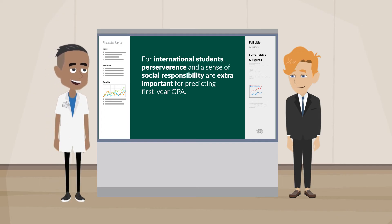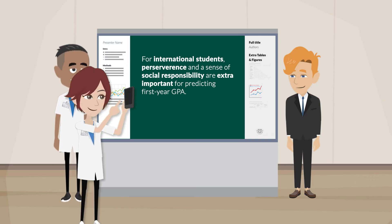But what if somebody is a super fan and they want a lot more detail than you can put on your poster? Or they just don't have time to stop right now and they just want to take a picture and get to it later? For these people, we're going to add a QR code that links to a copy of your full paper. These are really easy to use — just pull out your phone's camera and scan this code as a test — and you can create them for free online.